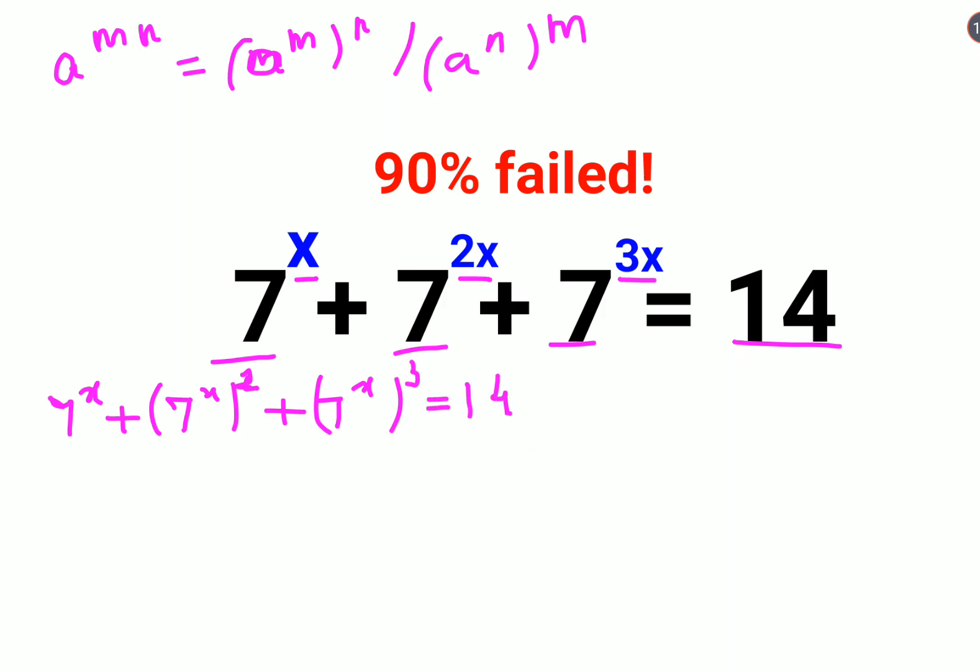Now what we will do is we will let 7 raised to x equals to m. So we are getting this as m plus m square plus m cube equals to 14. When you write this polynomial in its decreasing order of degree you get m cube plus m square plus m minus 14 equals to 0.